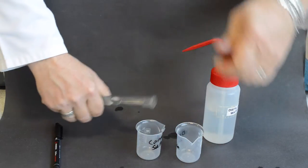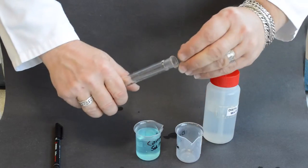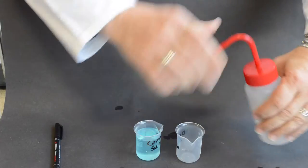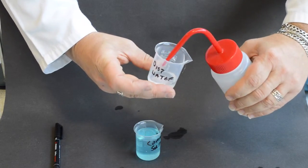Decant the sample of copper sulfate into a beaker so it can be easily poured into a burette. Repeat this process with distilled water.